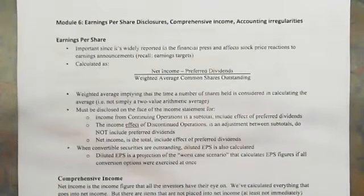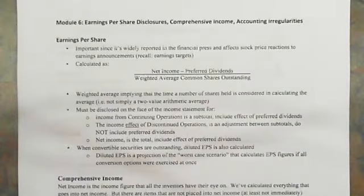Last time we were talking about the income statement, we were talking about below-the-line items. The first below-the-line item I introduced was the discontinued operation and the disclosure involved with that.